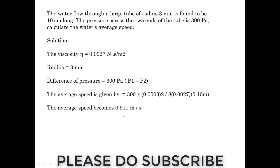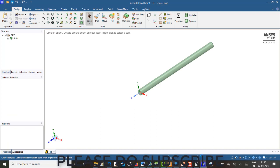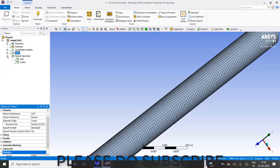The average speed on calculation will get 0.911 meters per second. Now I will just show it in Fluent, so it will have a better confirmation. You can see a geometry which I have created. I have created with radius R3 and with a distance of 10 cm long.